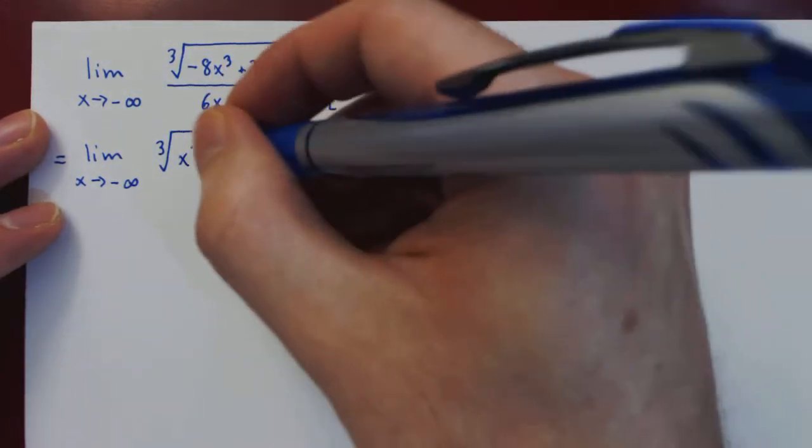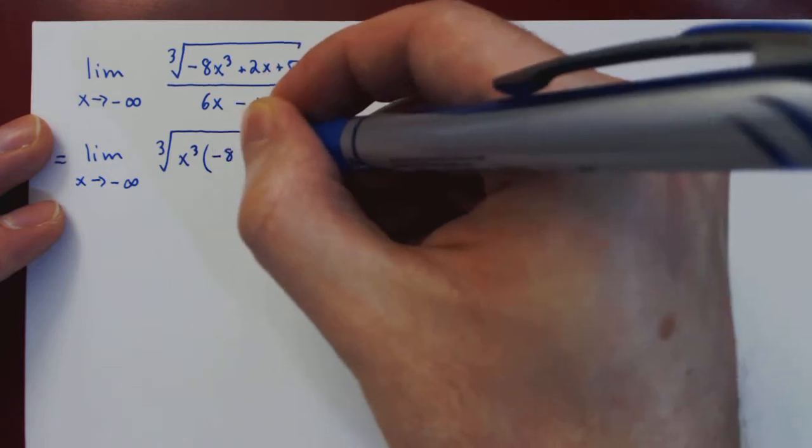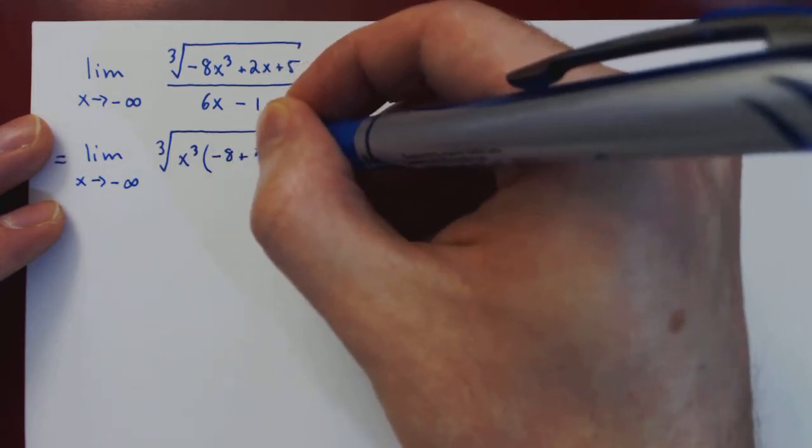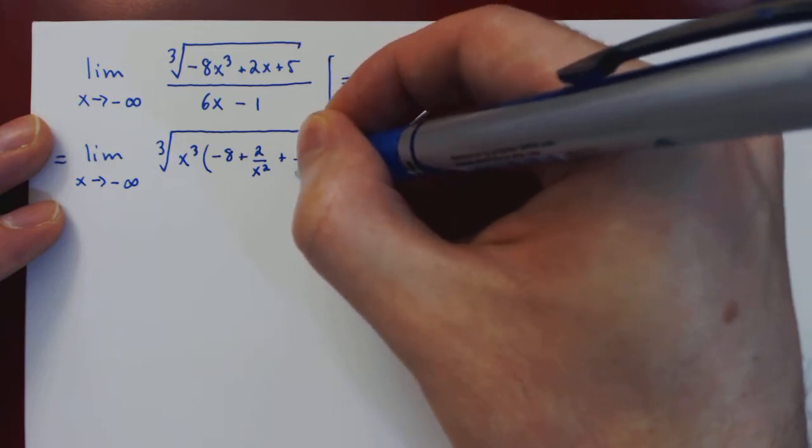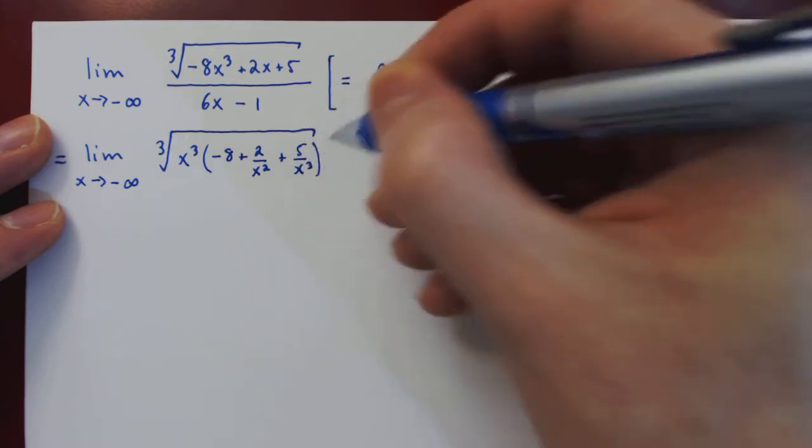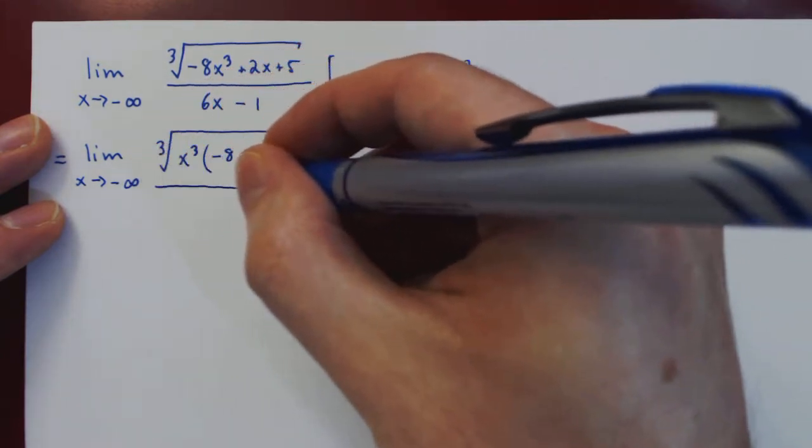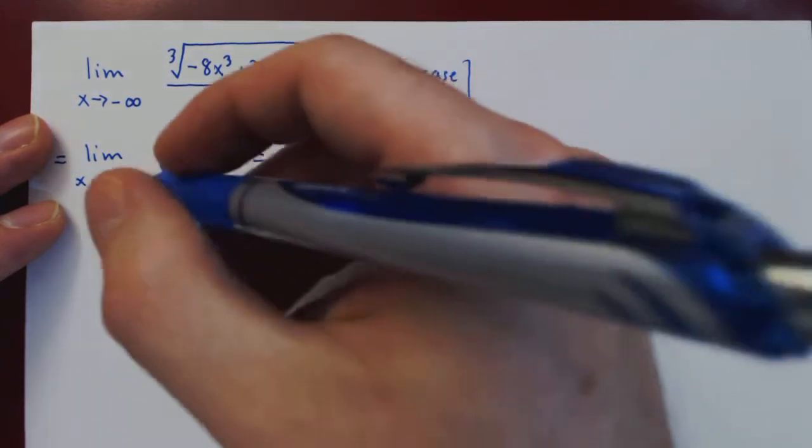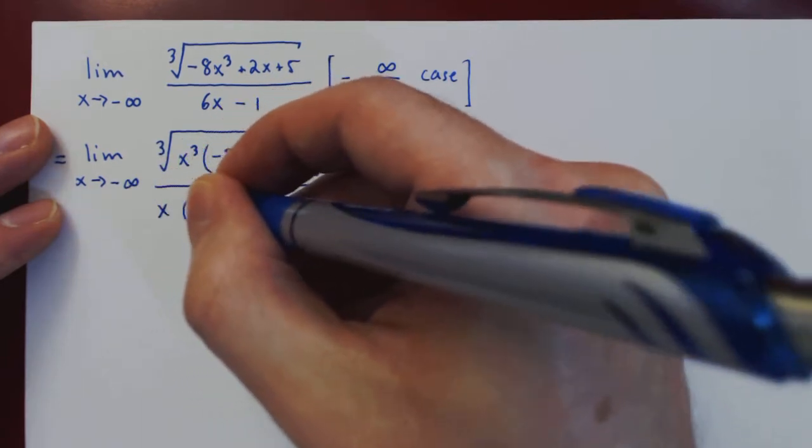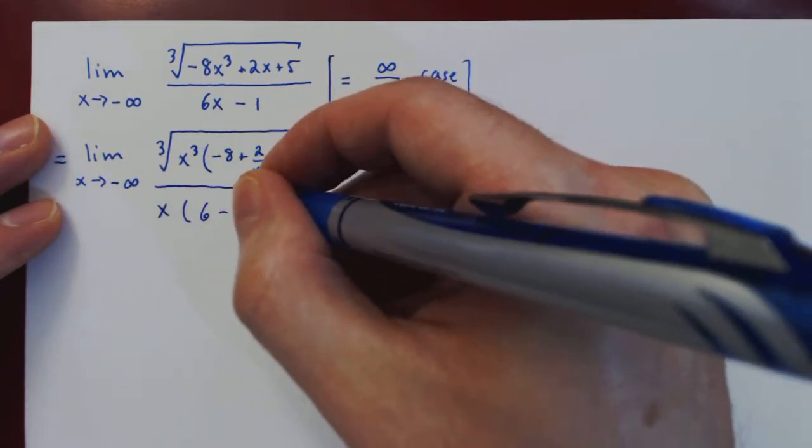And then what's left is negative 8 plus 2 over x squared plus 5 over x cubed, divided by—and we do the same thing on the denominator where now the largest power of x is 1, so we factor x and are left with 6 minus 1 over x.